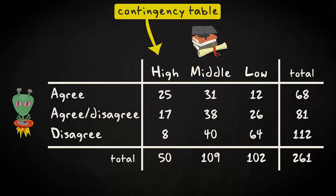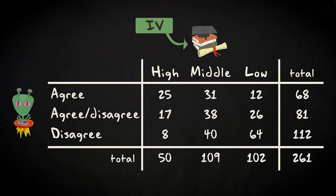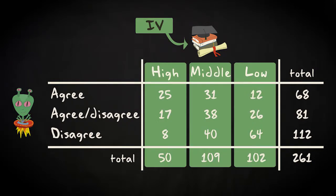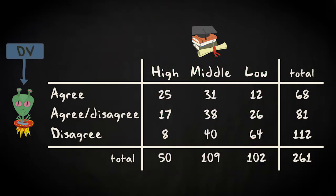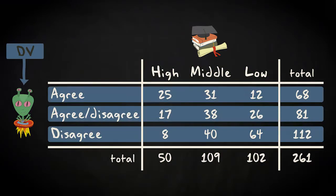The categories of what I expect to be the independent variable, education, are in the columns. And the categories of what, according to me, is the dependent variable, believe in extraterrestrial life, are in the rows.